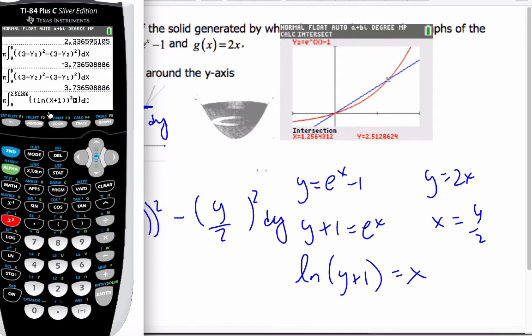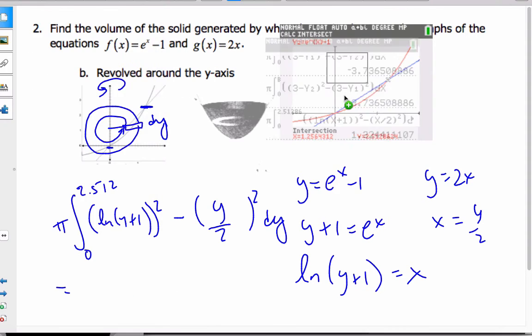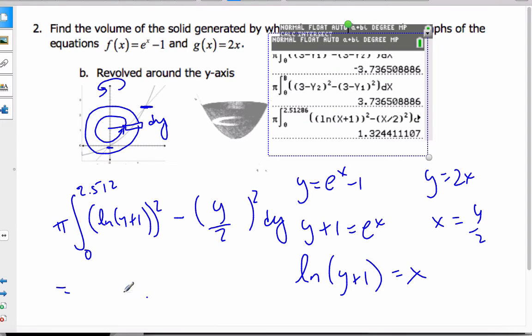And notice I put x in here because the calculator reads x's. And I'm going to subtract open parenthesis x divide 2 close parenthesis squared. And I'm integrating with respect to x. Hit the enter key. And I can see that my volume now is approximately 1.32 units cubed as my volume.